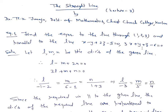Similarly, the line will also lie on the second plane, so it will be perpendicular to the normal of that plane. Direction ratios of the normal to this plane are 3, 1, 1, so we have 3l plus m plus n equals 0. By cross multiplication, we get l upon (minus 1 minus 2) equals m upon (6 minus 1) equals n upon (1 plus 3).